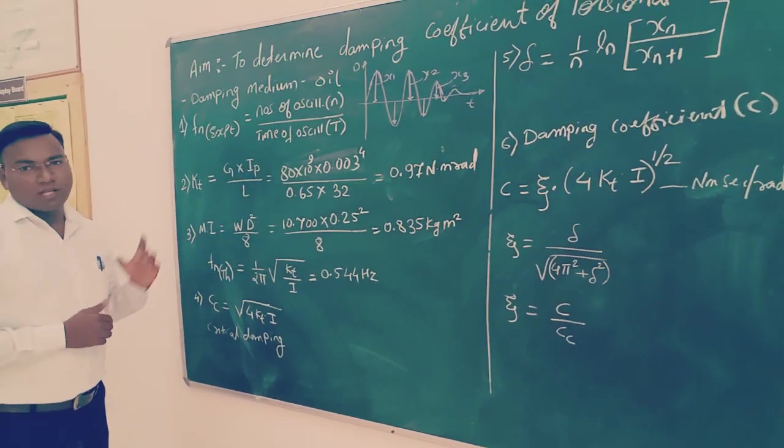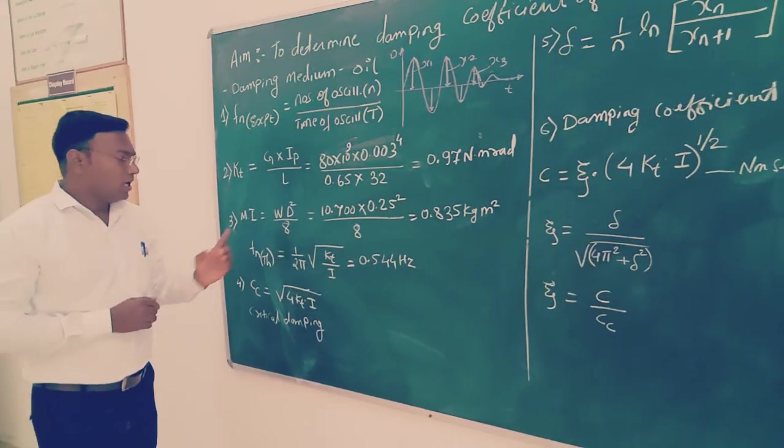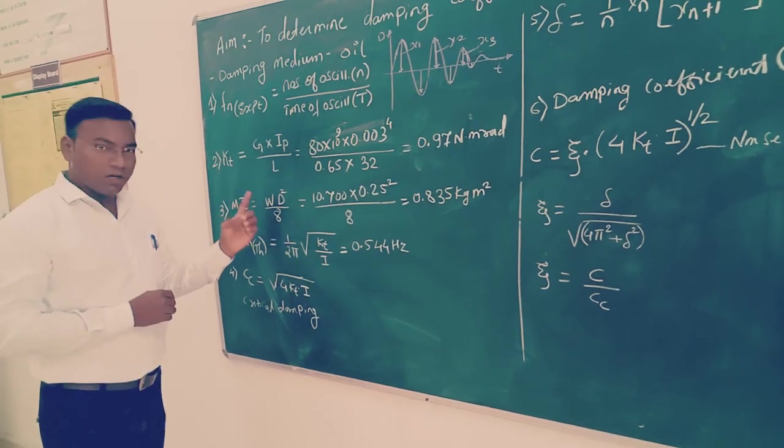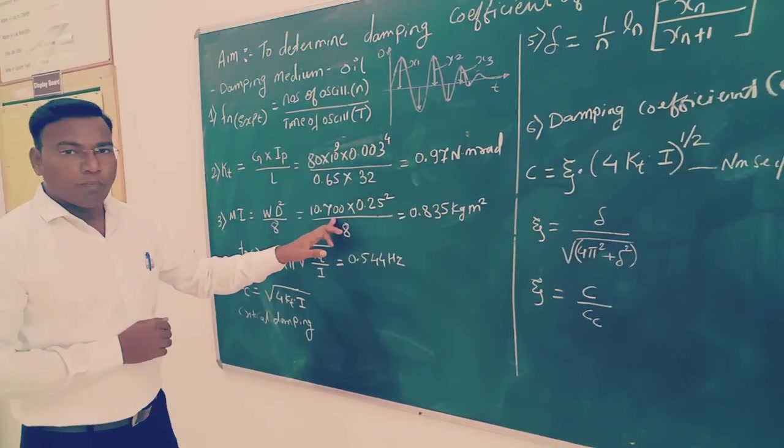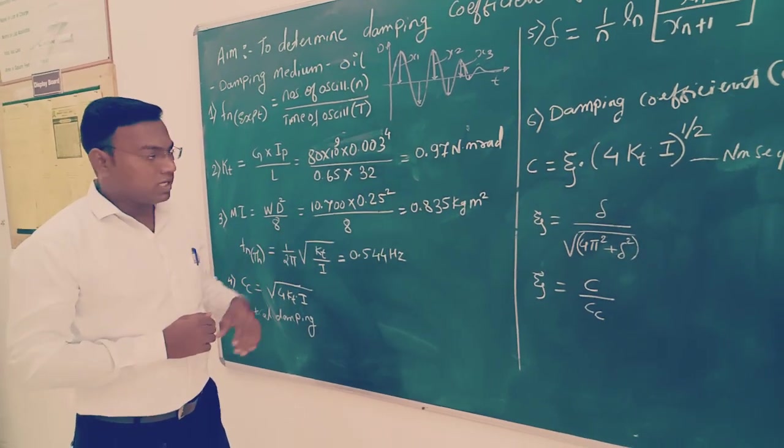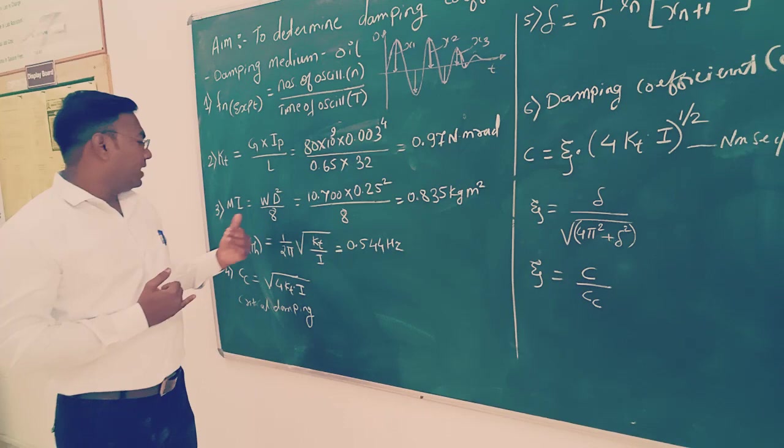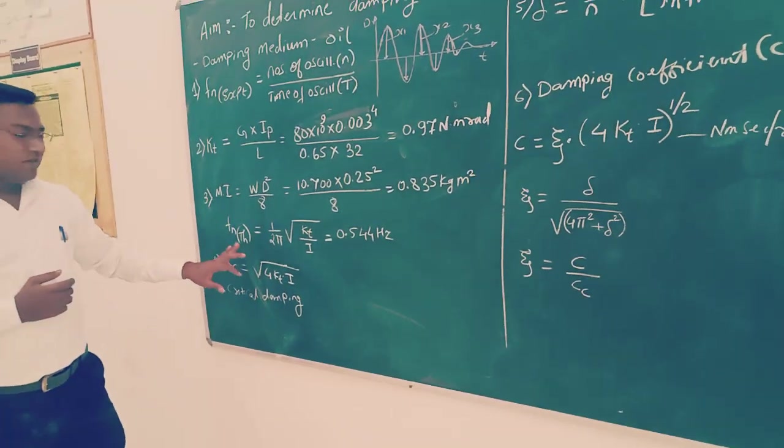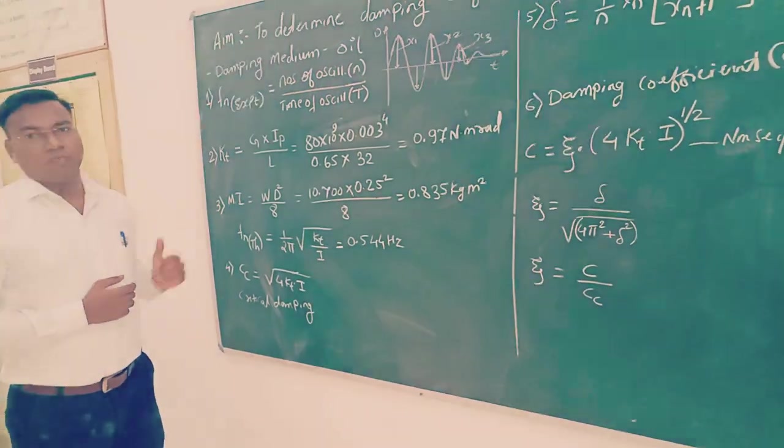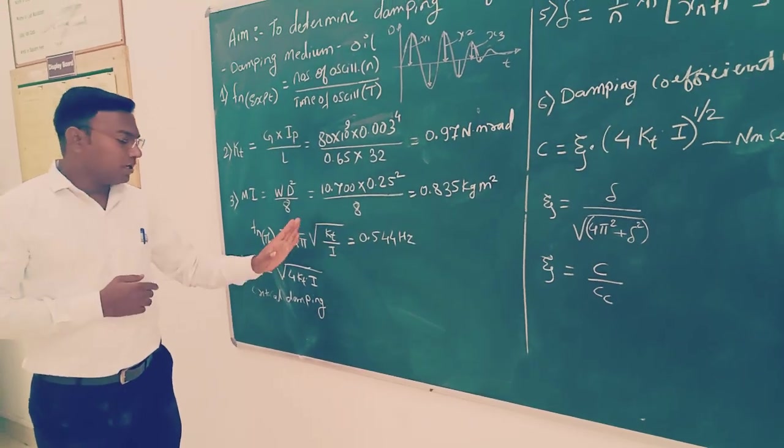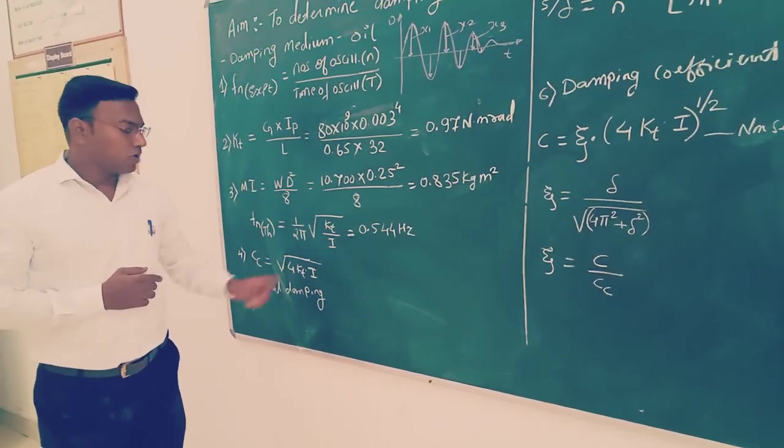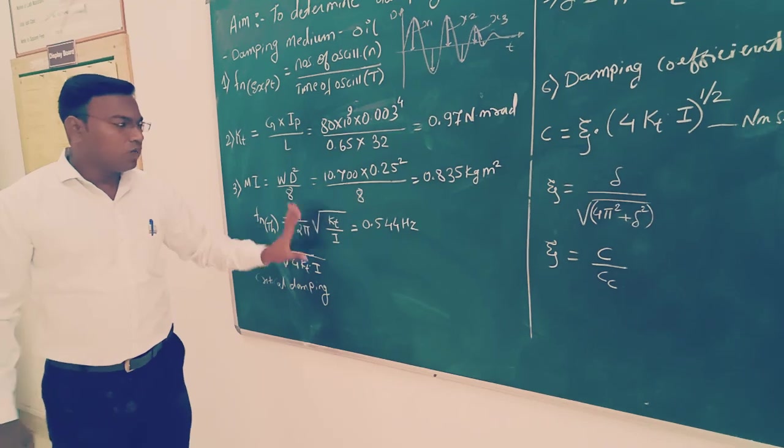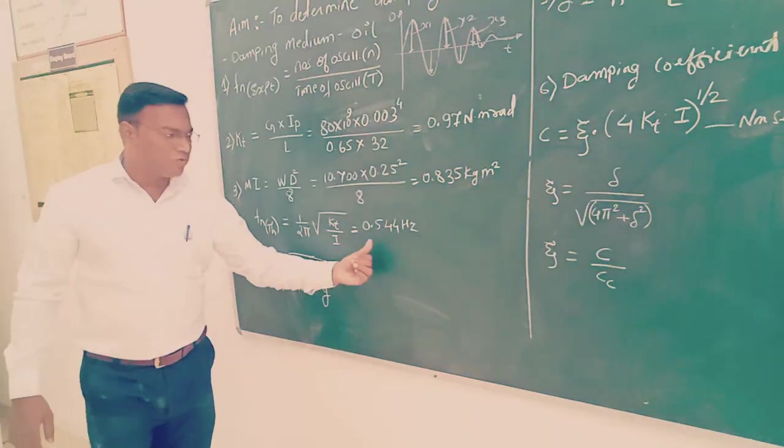Mass moment of inertia is an important parameter. We are going to consider it as weight of disk times diameter of disk squared divided by 8g. The weight of disk is 10.7 kg and diameter is 0.25 meter, which determines to be 0.8 kg-m². Theoretical natural frequency is 1/(2π) times square root of KT/I, which comes to be 0.24 Hz.